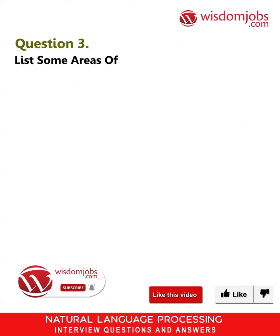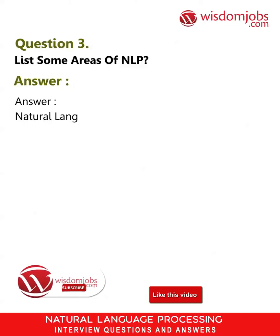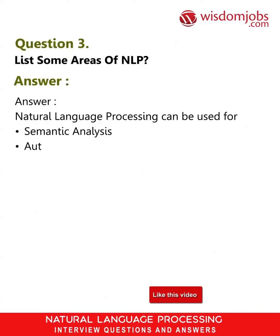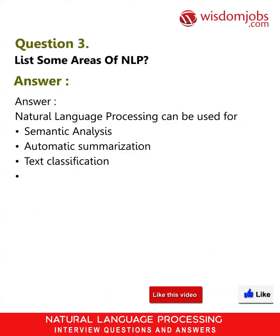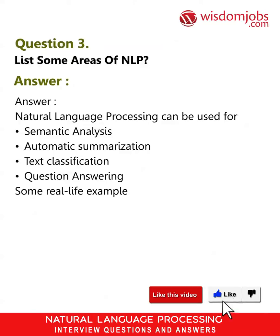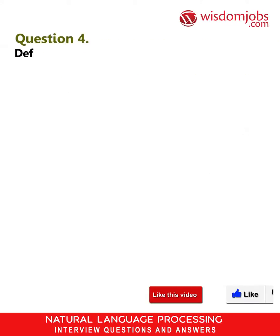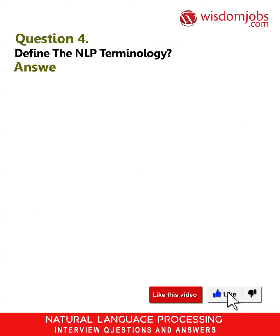Question 3: List some areas of NLP. Answer: Natural Language Processing can be used for semantic analysis, automatic summarization, text classification, and question answering. Some real-life examples of NLP are iOS Siri, the Google Assistant, and Amazon Echo.